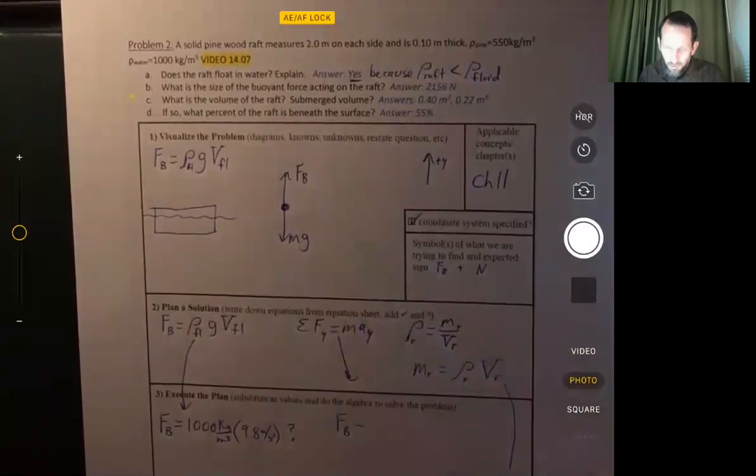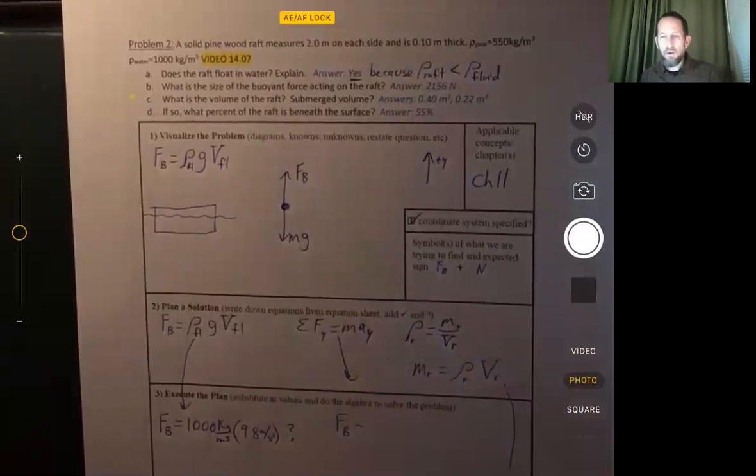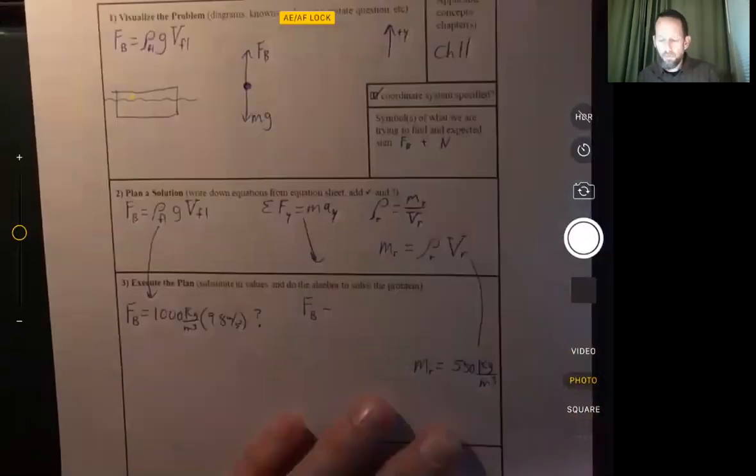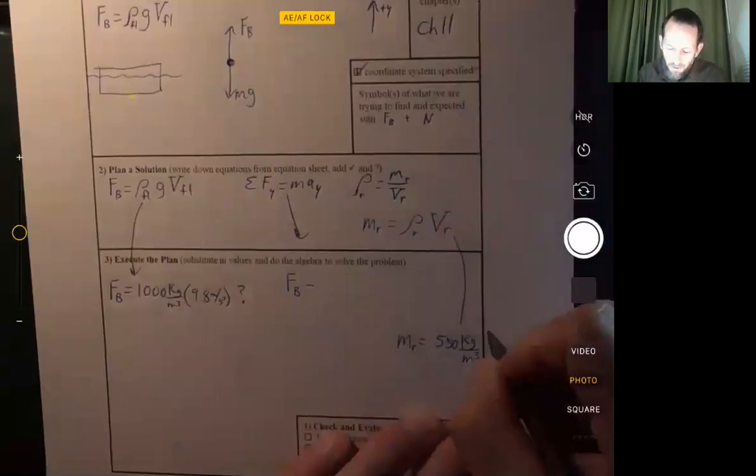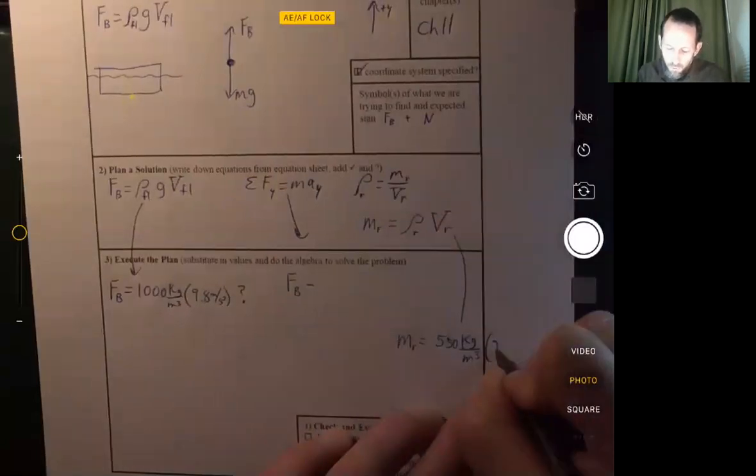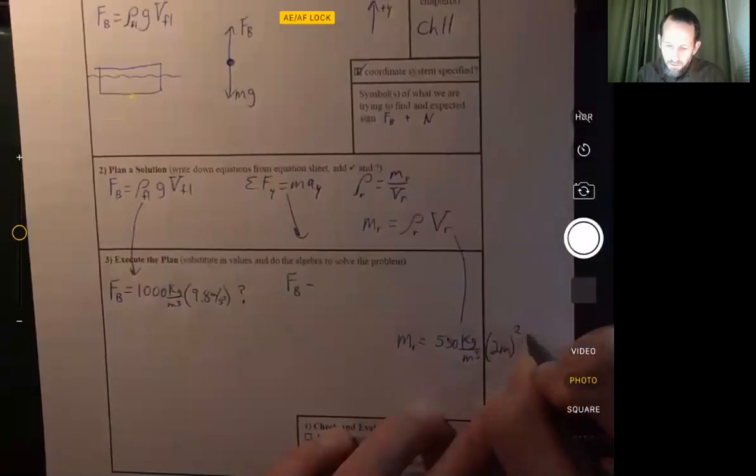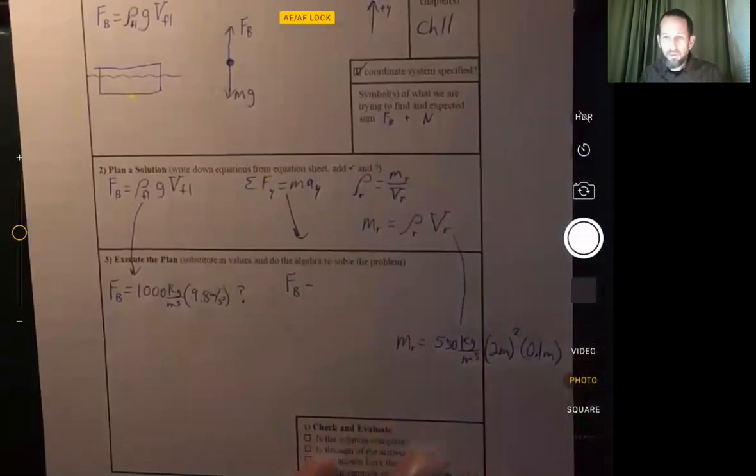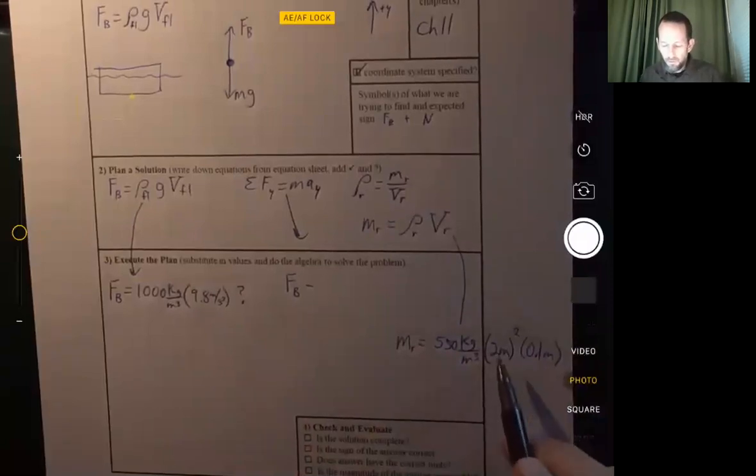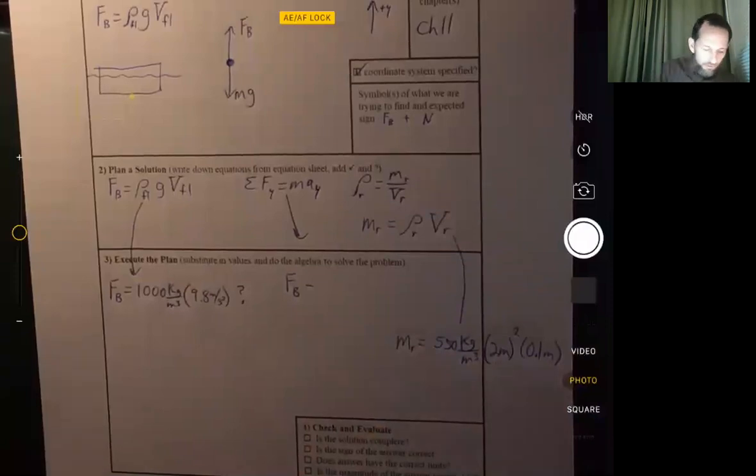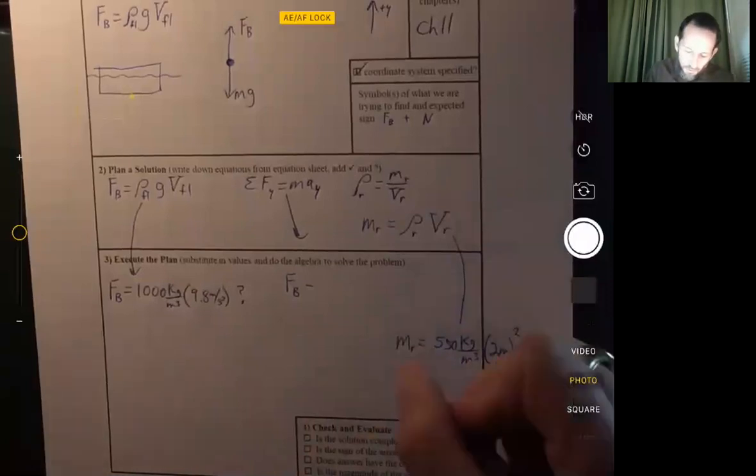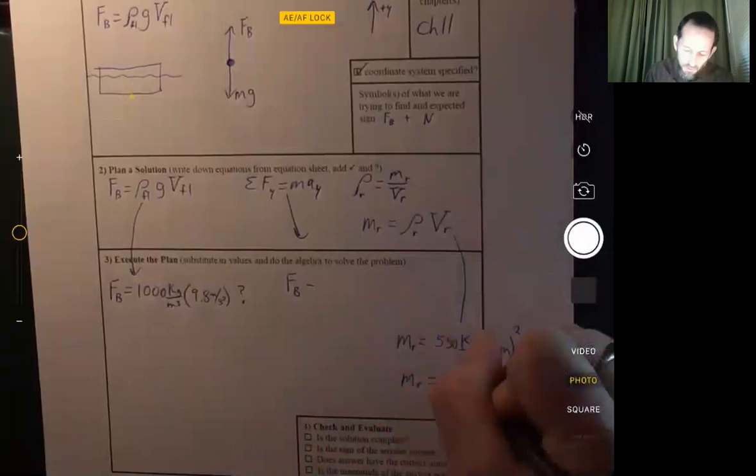So the mass of the raft equals 550 kilograms per cubic meter. Oh, I'm off the screen. Here we go. Times, what's the volume of the raft? Well, it's two meters times two meters times 0.1 meters. So length times width times height. Length and width are both two meters. The height 0.1 meters. So now we can calculate the mass 550 times 2 times 2 times 0.1. And that comes out to 220 kilograms.